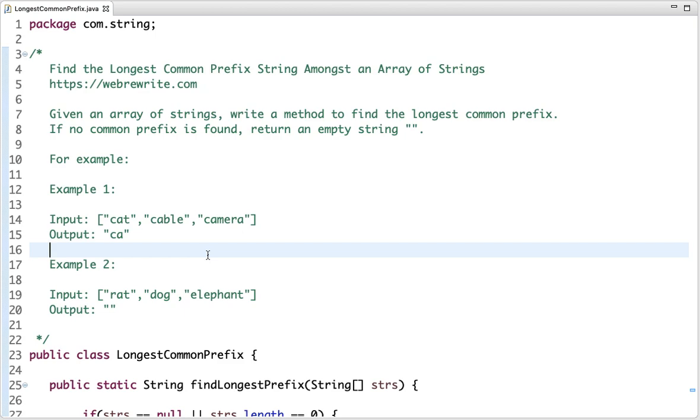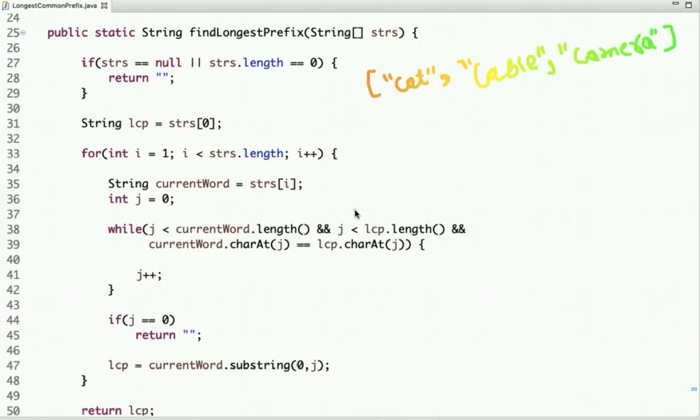Now let's discuss the solution part. Here is the solution part in which what I am doing is: I have assigned the string present at 0th index to this variable lcp. So 'cat' is assigned here and let's assume that this is your longest common prefix till now.